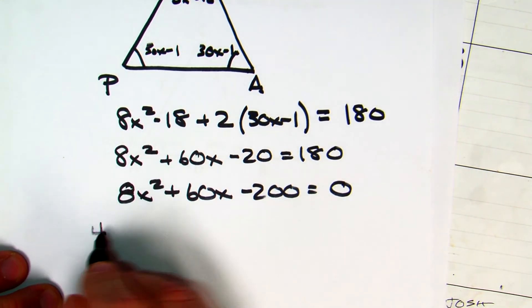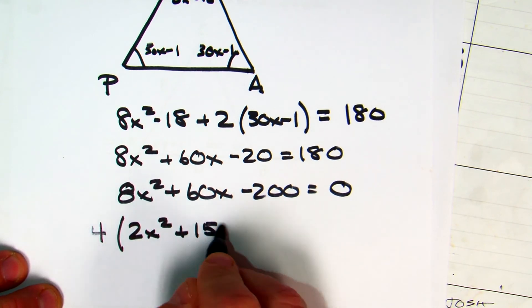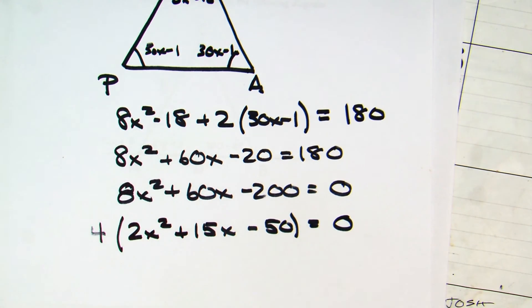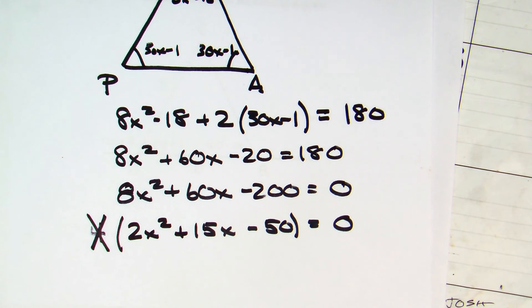And I'm going to pull out a 4, even though A is still not 1, it at least makes my numbers smaller. Once you pull out a constant, because it's equal to 0, you can cross it out. So 2x squared plus 15x minus 50 equals 0.